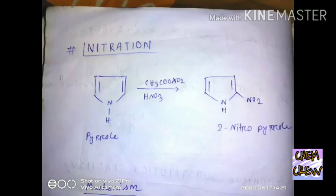Nitrosation also occurs in pyrrole. If we treat pyrrole with acetyl nitrate and HNO3, then 2-nitropyrrole forms. We will show the mechanism also. Step 1 of the reaction is generation of electrophile, because the electrophile is required for attack.